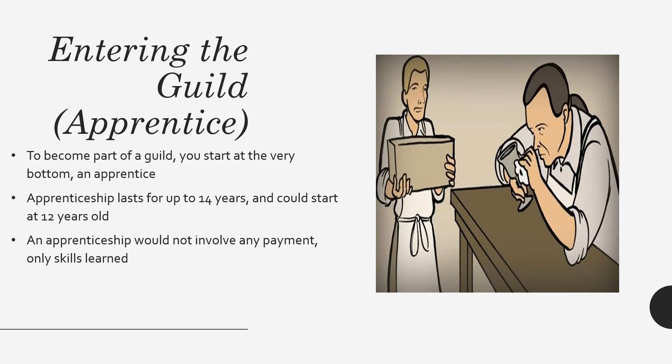In the guild there are three levels, and at the very bottom is the apprentice, where everyone starts out. An apprenticeship can last for up to 14 years, and you could actually start at 12 years old. Journeymen and master craftsmen looked for younger people to train because they would have more time to train them and get technically free labor. All the apprentice received was the skills learned, plus food, clothing, and shelter.